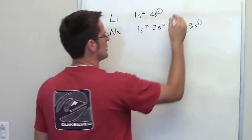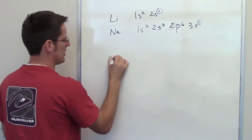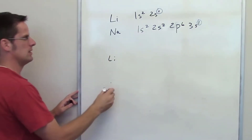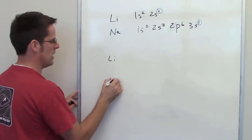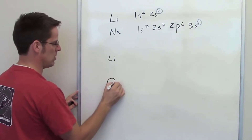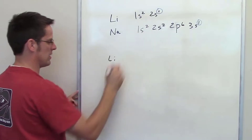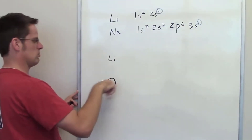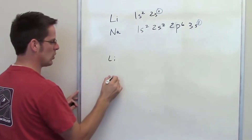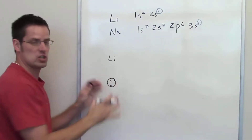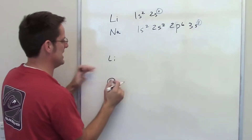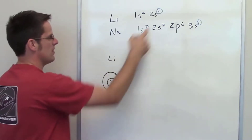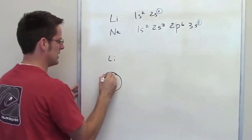You can imagine lithium like this: it has a nucleus represented by a dot. It has a 1s orbital, which is very, very small, and inside that 1s orbital there are two electrons soaring around. Its 2s orbital, just like a Russian nesting doll, is nested outside the 1s orbital — a bigger sphere — and the 2s orbital has a single electron in it.